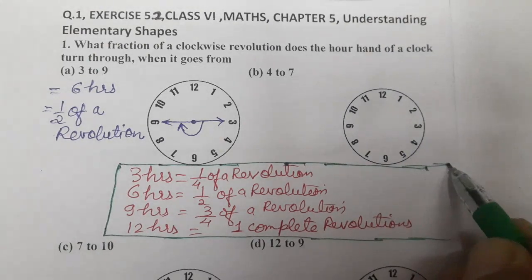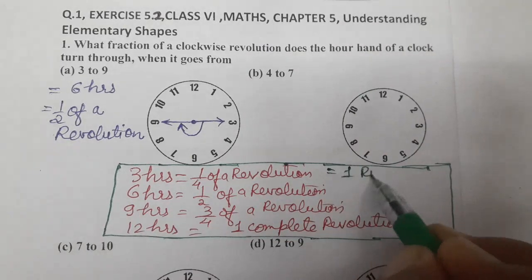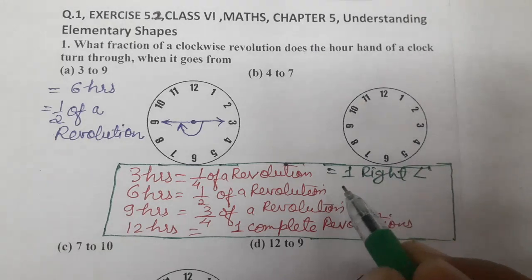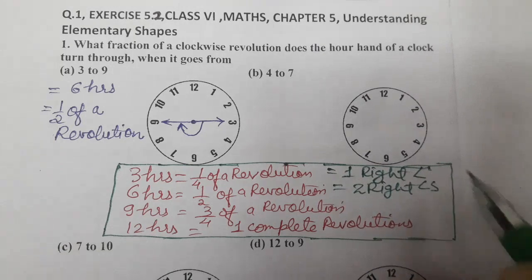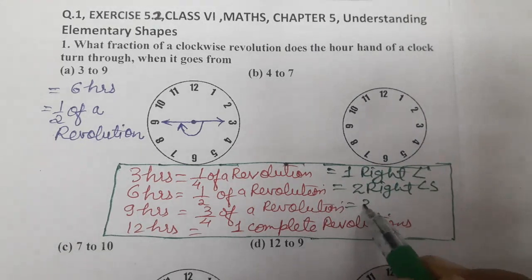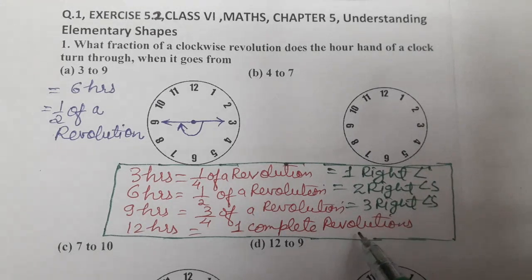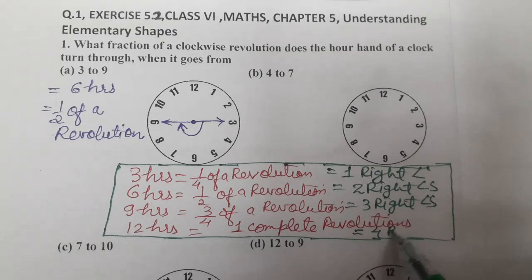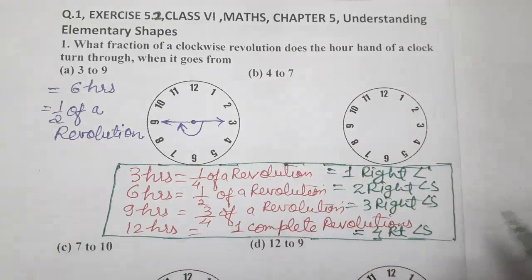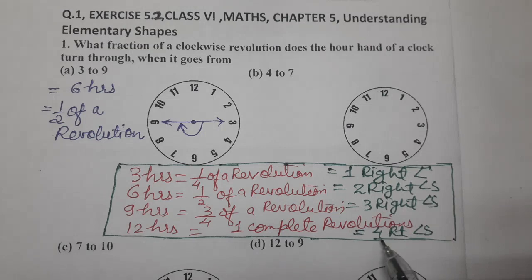Now, let's see. And one more thing. 3 hours means 1 right angle. You must know this also. 6 hours means 2 right angles. It turns through 2 right angles. Then, 9 hours means 3 right angles. And 12 hours means, 1 complete revolution means, 4 right angles. And, 2 right angles is also known as straight angle, 1 straight angle. And 4 right angles, 2 straight angles.